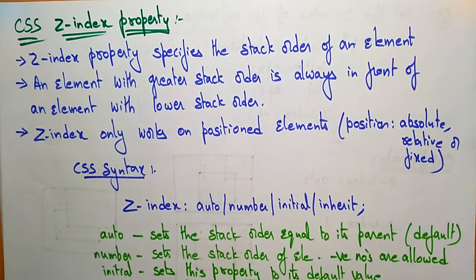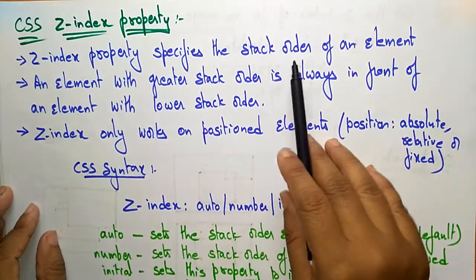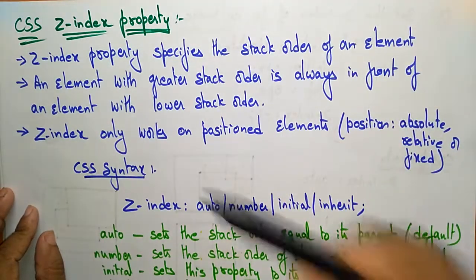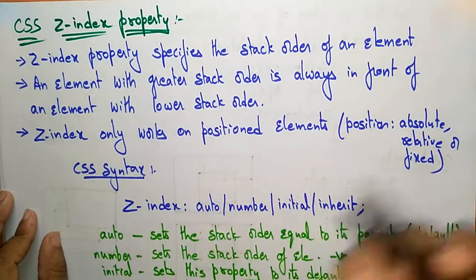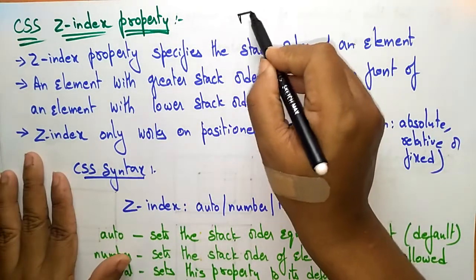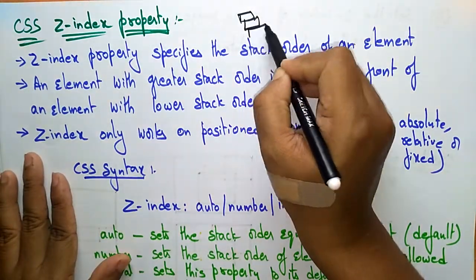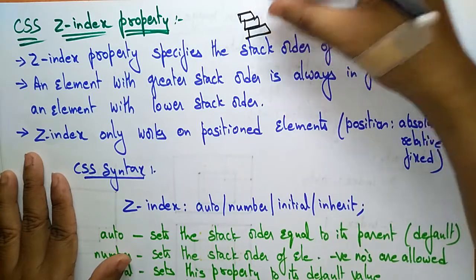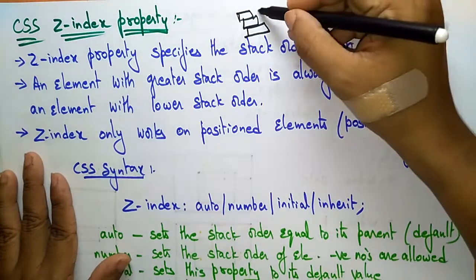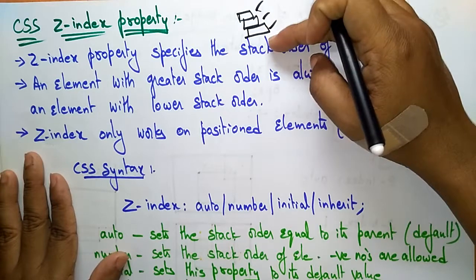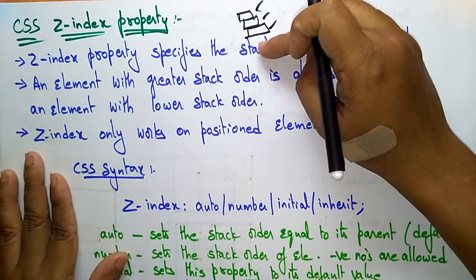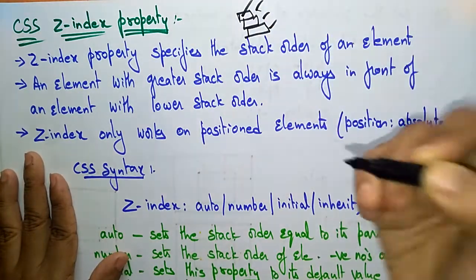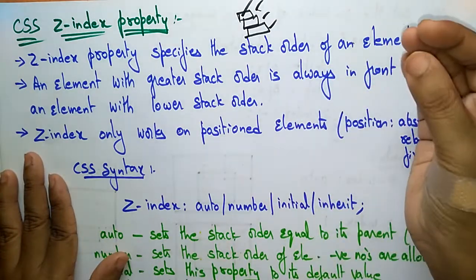Hi students, let's continue with the CSS properties. The next property is the Z-index property. A Z-index property specifies the stack order of an element. This property is going to be applied on a bunch of stacked elements. The Z-index property specifies in which order the element has to be placed — first place, second place, or third place. Whatever element you select, that element will be placed in that order.